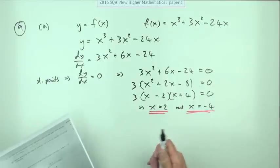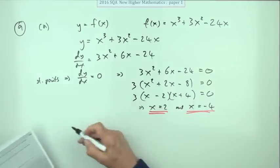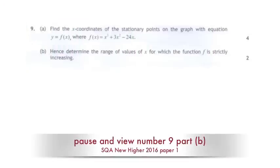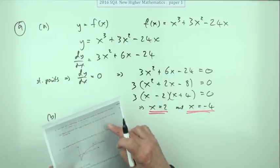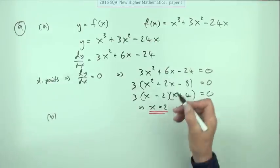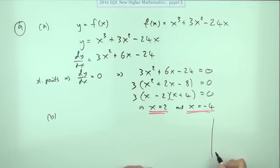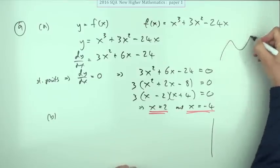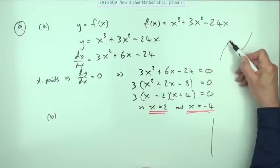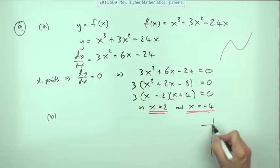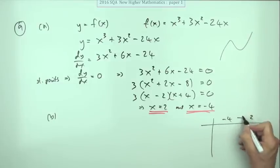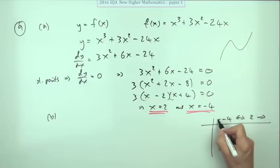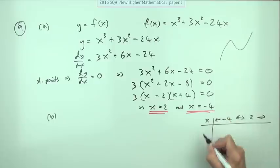And in part a, I'm not going to use the nature table because it's part b that says hence determine the range of values of x for which the function is strictly increasing. Now you'd make up your nature table just to see when it's heading up and when it's heading down. Although you know anyway, you've got a positive cubic graph, it's going to look like this. It's increasing here and then it's increasing again there.